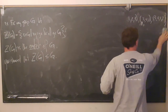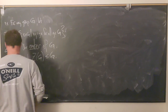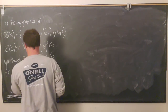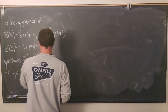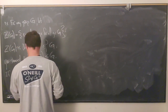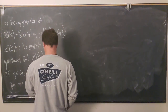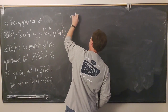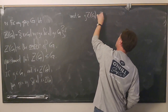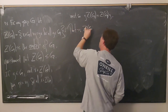It's essentially the same proof as the abelian case. If little g is in capital G and little x is in the center of G, then gx equals xg for all x in the center. And so g times Z(G) equals Z(G) times g — that is, the center is a normal subgroup.